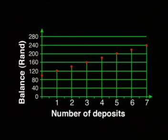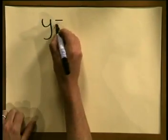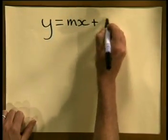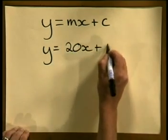Each deposit is constantly 20 Rand, so the rate of change is 20 Rand. As you know, the equation of a straight line is given by y = mx + c. In this formula, m refers to the rate of change — in other words, the gradient. From the graph we saw that the constant was 100 Rand, telling us the balance before it starts to change. So our equation in this case is y = 20x + 100.